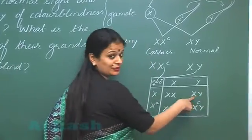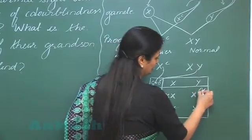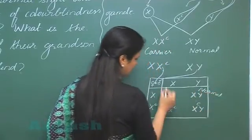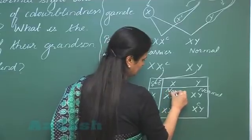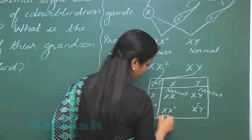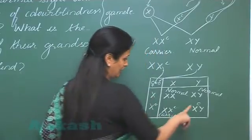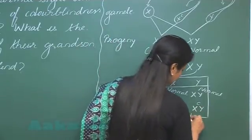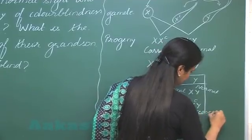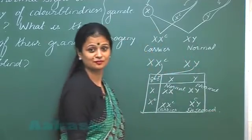Now this one is normal condition. Again this is normal. This one is carrier female. And this is color blind male - diseased condition.